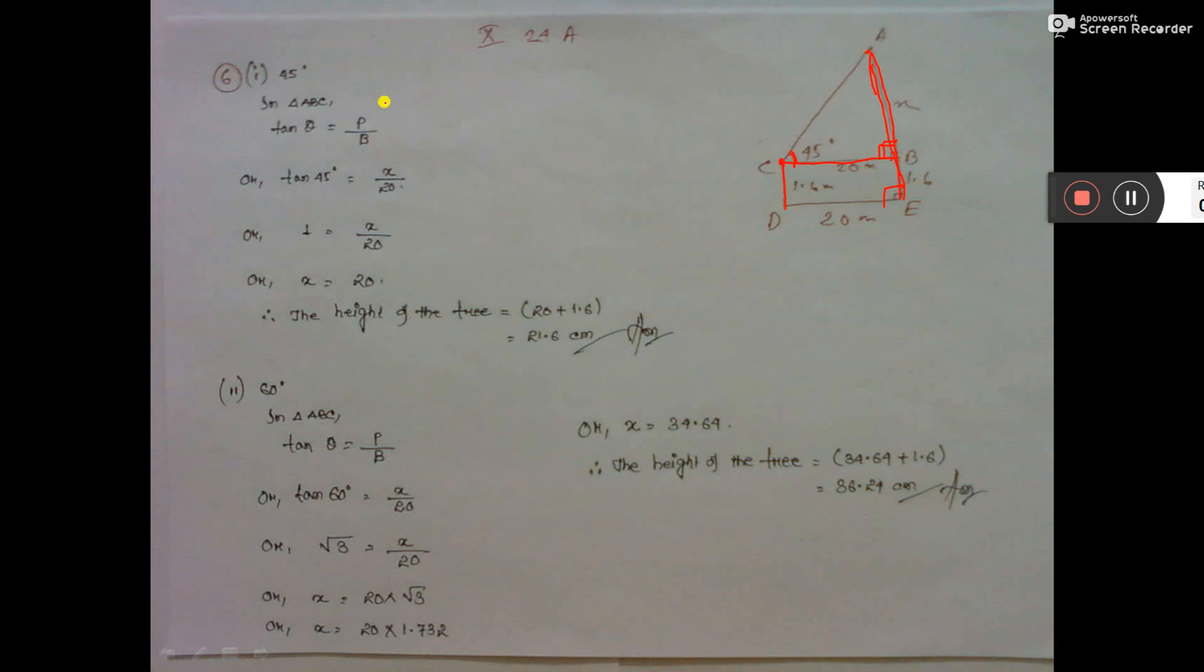Now take triangle ACB. Tan theta equals perpendicular by base. The perpendicular, let's consider as X. So tan theta equals perpendicular by base, and the base is 20.